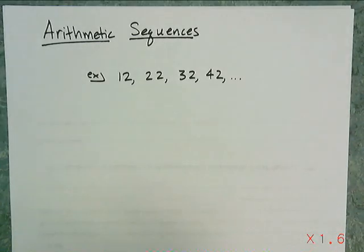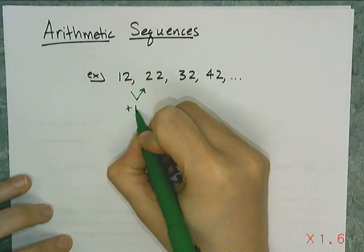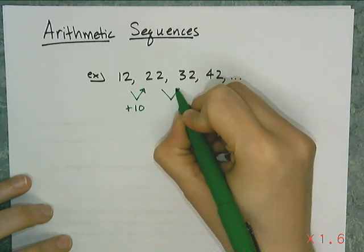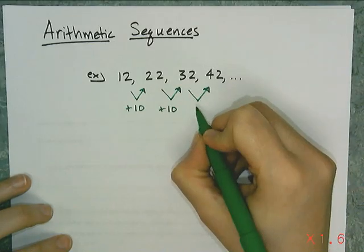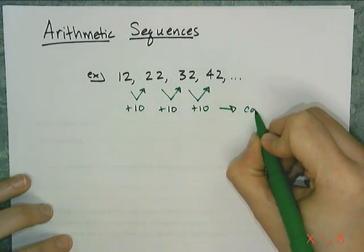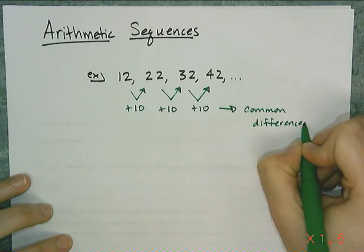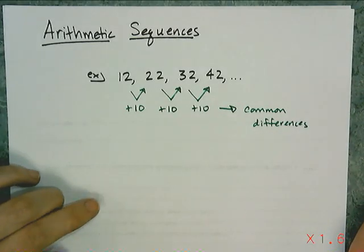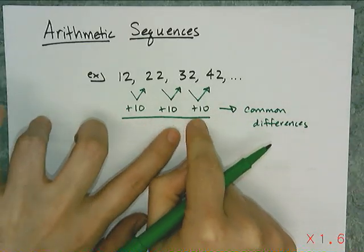What makes it arithmetic is the fact that the terms have what's called a common difference. If I look at how to turn a 12 into a 22, I have to add 10. I have to add the exact same 10 to turn a 22 into a 32, and then a 32 into a 42. So if I want to verify that a sequence is arithmetic, what I have to look for is that common difference — it's always the same number every single time.